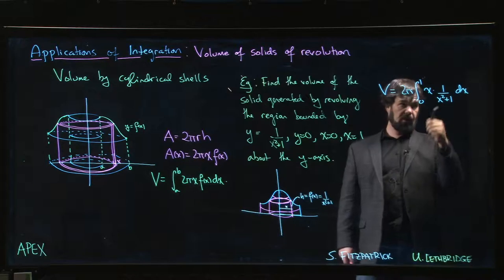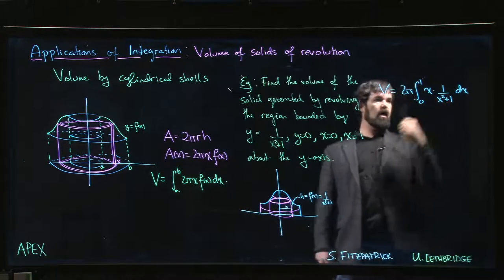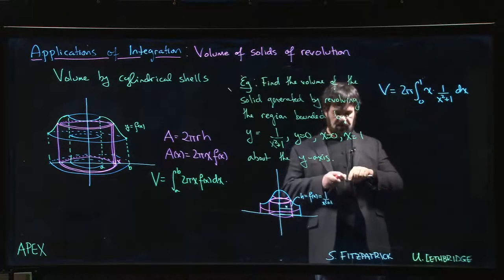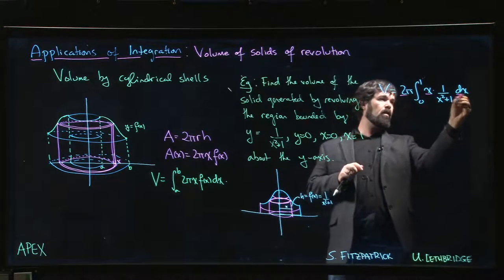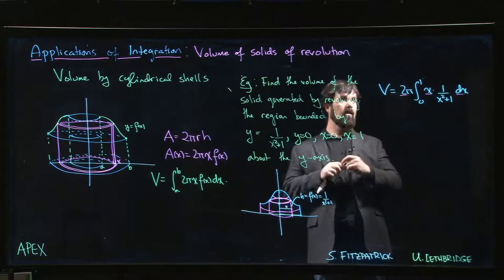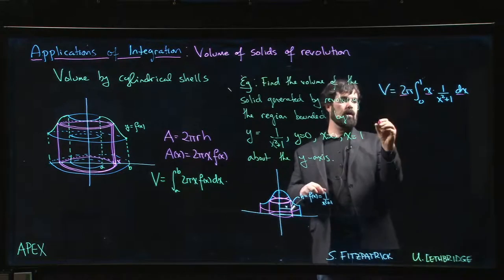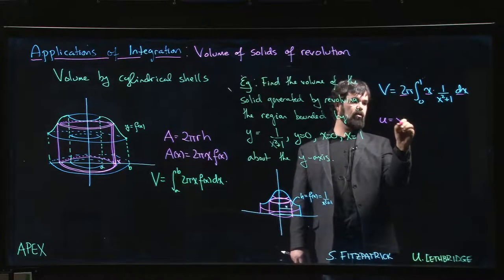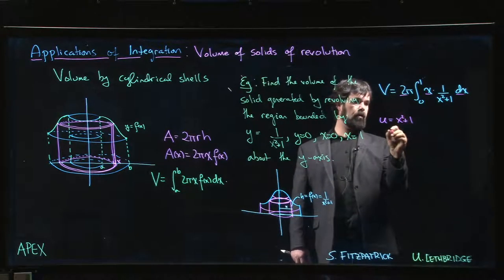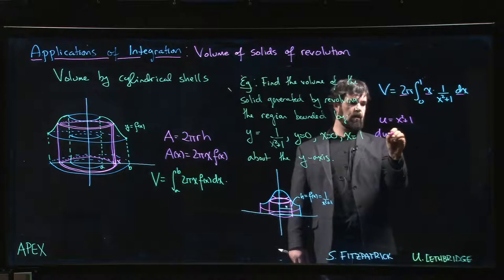I bet you thought you're gonna have to use arctan or something like that because of that 1 over x squared plus 1, but the x in front—in fact, the 2x dx out front—suggests that we could do the following substitution.